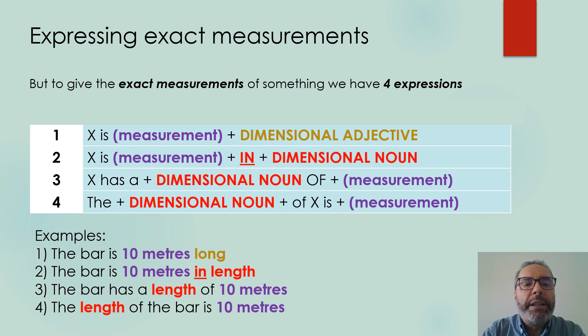And the third expression, number 3, we have that something has a plus the dimensional noun, then preposition of plus the measurement. Example 3. The bar has a length of 10 meters.